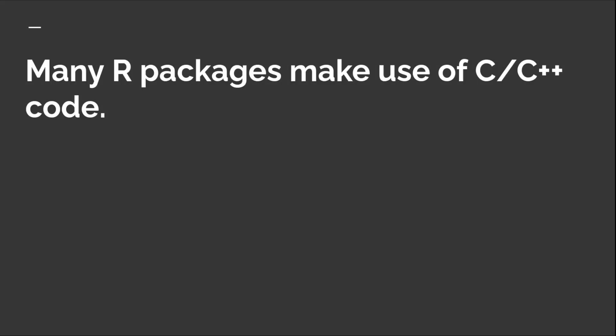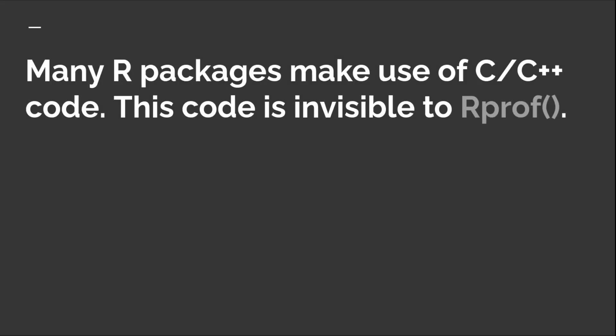There's another piece of this puzzle. More and more R packages are making use of C and C++ code. It's always been possible to embed native code in R — it's actually one of R's strengths. But partly because of democratizing tools like Rcpp, which have made it much easier to write C++ code, it's now much more common to include C++ in an R package. This is great for performance on one hand, but it does create a problem: Rprof can actually only see functions happening inside R code, so the more code that runs in C and C++, the more is totally invisible to Rprof.